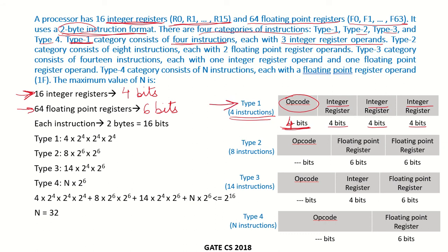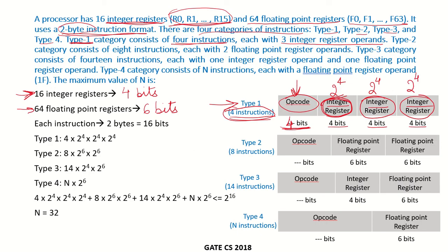For Type 1, the number of different combinations possible is: 4 instructions, and each integer register operand can be any of the 16 registers, giving 2⁴ options per operand. So the total combinations for Type 1 are 4 × 2⁴ × 2⁴ × 2⁴.